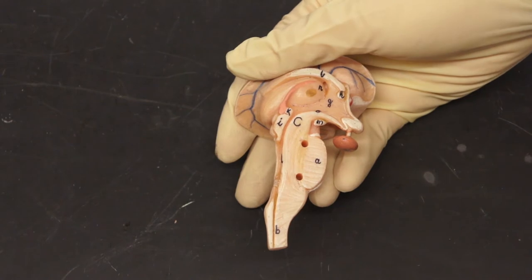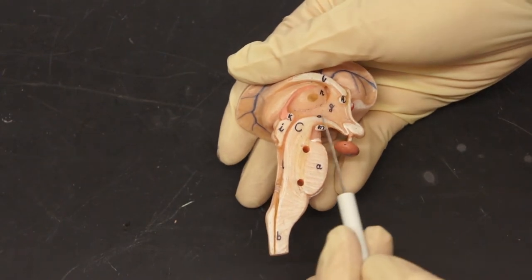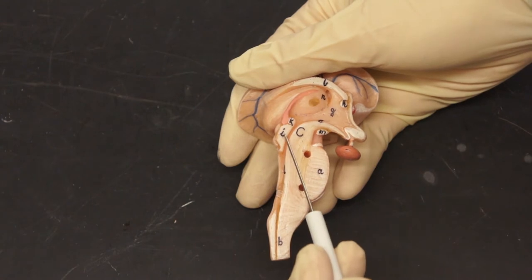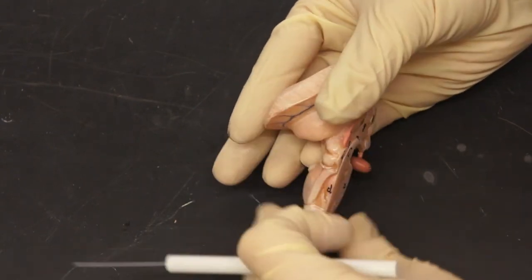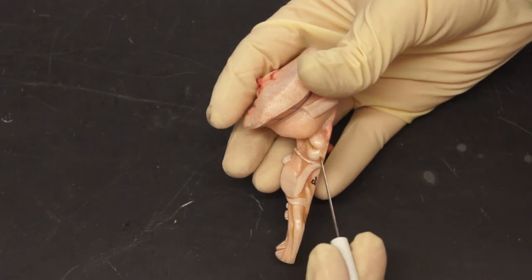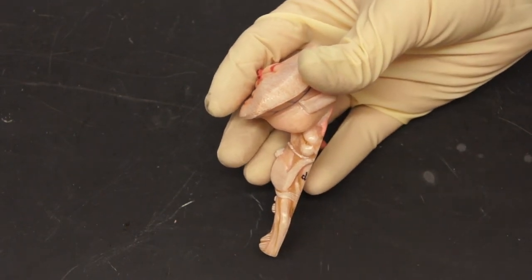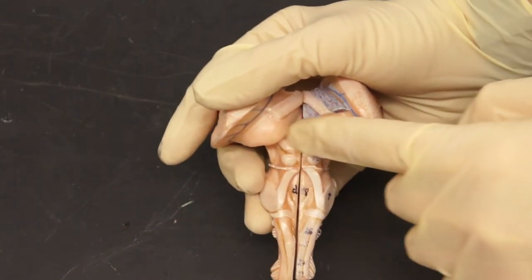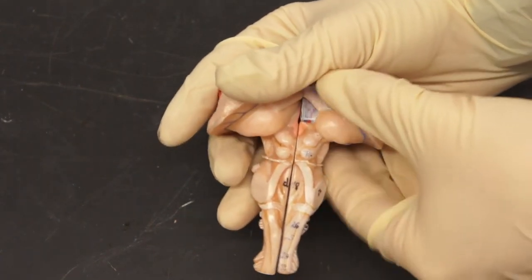And on the brain stem, we have the mesencephalon, or the midbrain, right here. Here we have the tectum, this region, and on that, we have superior colliculus and inferior colliculus. If you look at it together, we have superior colliculi and inferior colliculi.